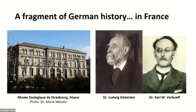Some of you might not know that a part of nowadays France called Alsace was actually part of Germany for 50 years, from 1870 to 1920, and that was a time of intense development for the local zoological museum of Strasbourg. The German curator, Dr. Ludwig Döderlein, was in exchange with several German scientists, including Dr. Carl Wilhelm Ferhoff, who during that time sold his specimens to the museum, where they remain today.